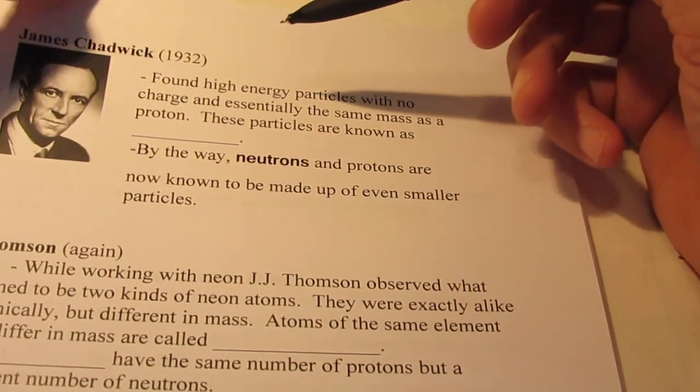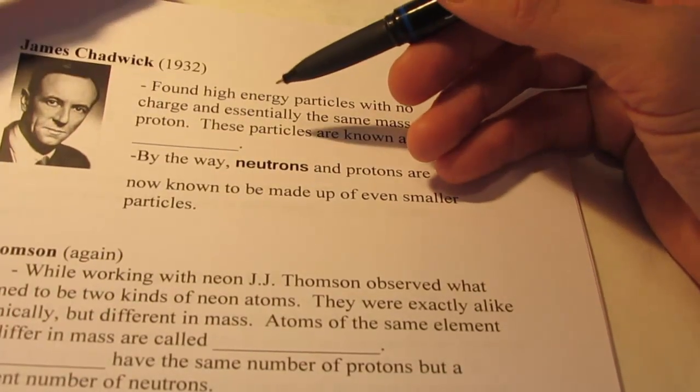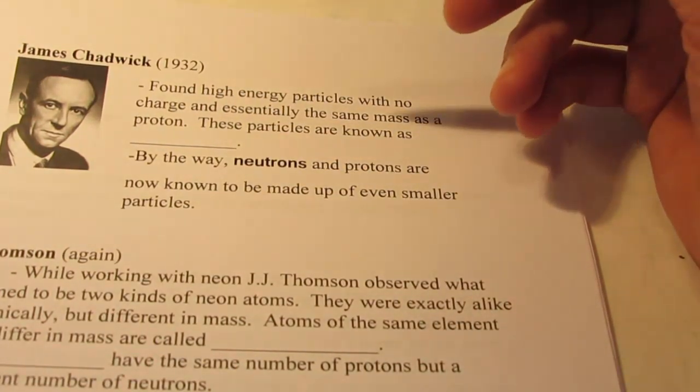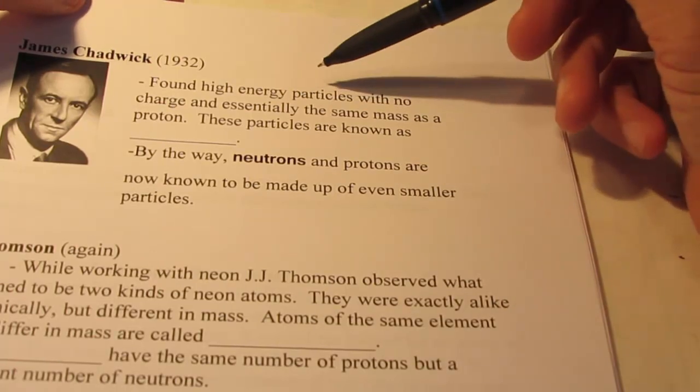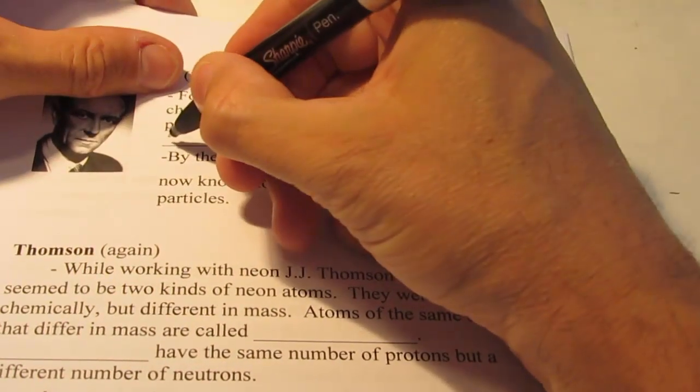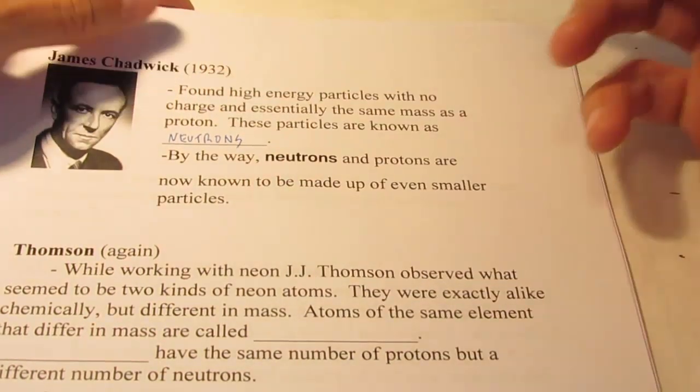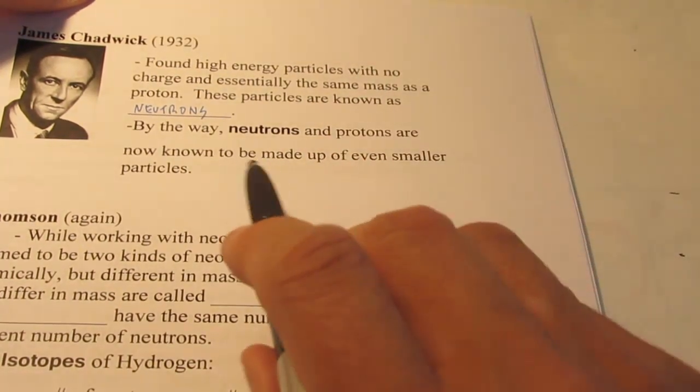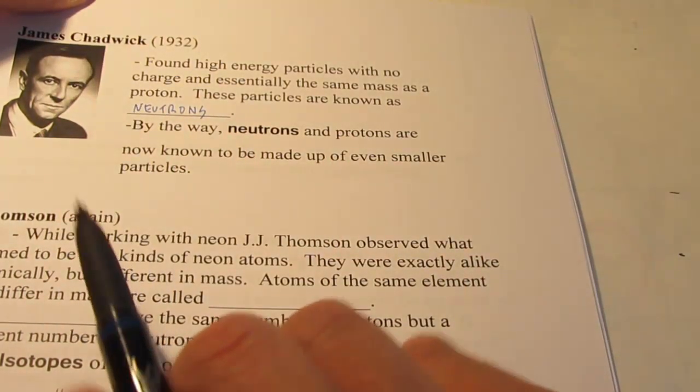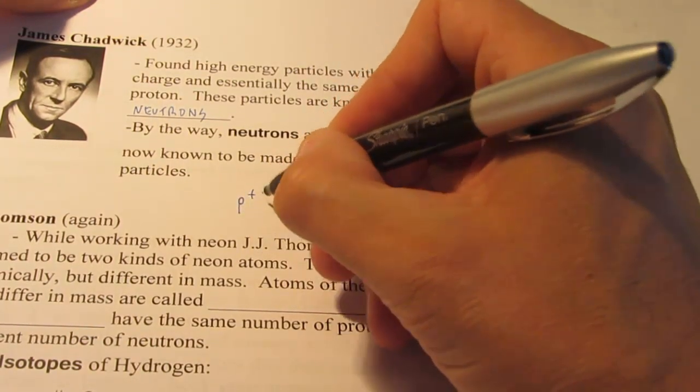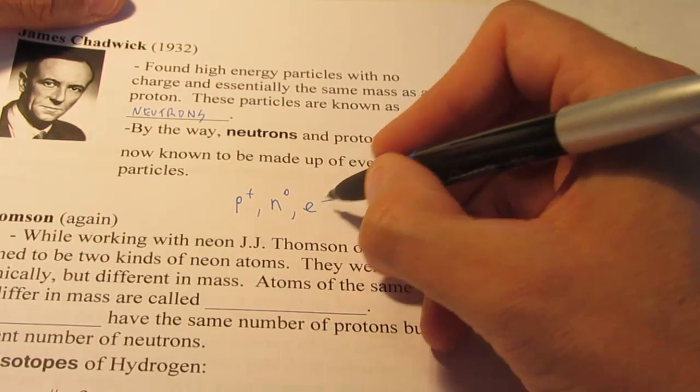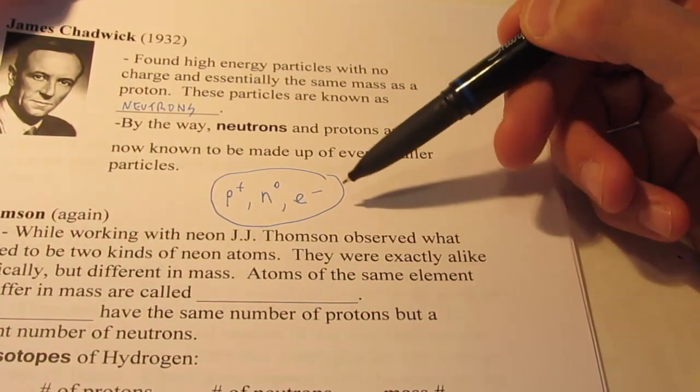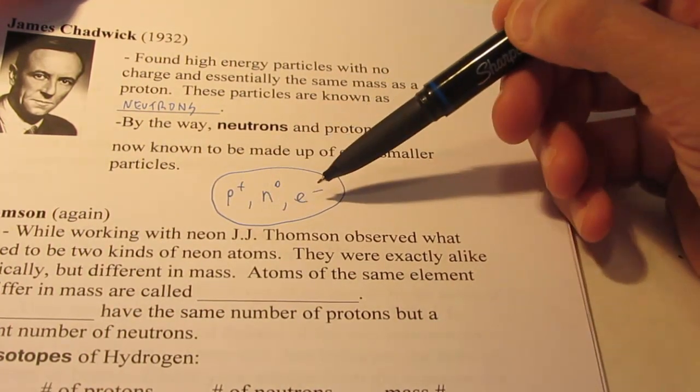Now about 20 years later, James Chadwick came on the scene, and it was postulated that a third subatomic particle existed, but these were very difficult to find. 1932, if you think about it, relatively speaking, was not that long ago. In fact, he's the first guy that we've seen who dresses somewhat in a modern fashion, don't you think? He found high energy particles with no charge and essentially the same mass as a proton, so about the same weight as a proton, but they didn't have a charge this time. These particles are known as neutrons. By the way, neutrons and protons are now known to be made up of even smaller particles. We won't even begin that discussion. All we'll worry about in this class are the subatomic particles that are protons, symbolized with a P with a plus sign, neutrons, N with a superscript not or zero, and electrons, E with a negative sign. Those are the only subatomic particles we will concern ourselves with in first-year chemistry. Do not worry about what protons, neutrons, and electrons might be made up of.